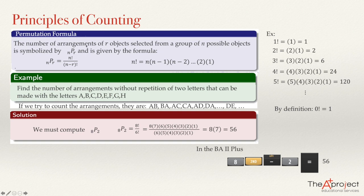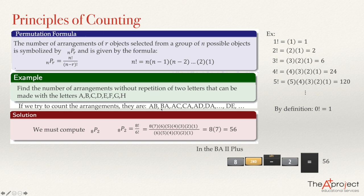In permutations, what is important is the order. So AB and BA have the same elements, but they have a different order — for that reason they are different permutations, or different arrangements. When the order is not important — when AB and BA are considered the same — we don't say we are counting permutations; we say we are counting combinations. And this will be our last principle in this video.